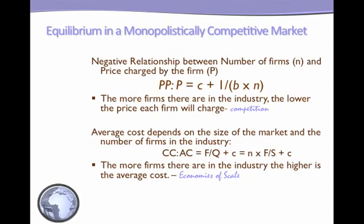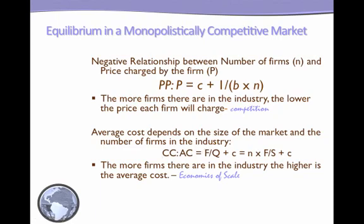These are the two equations that define the equilibrium in the market. The first is the PP function — the relationship between prices and number of firms. As the number of firms increases in the market, there is more competition which drives down prices. The CC function gives you the relationship between average cost and number of firms. As the number of firms increases, you have a smaller share of the market, your output decreases, and your average cost increases — this arises from economies of scale.